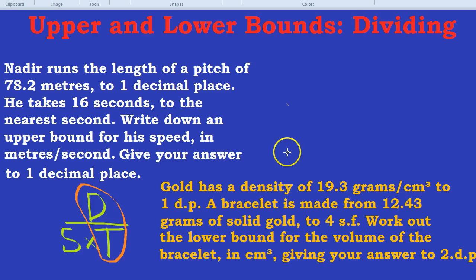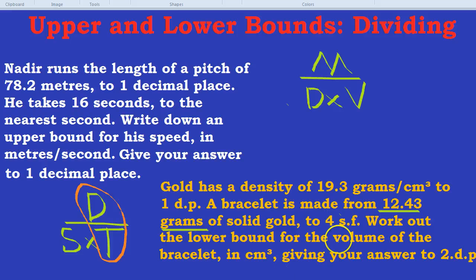We're going to need to know the mass-density-volume triangle. Again, a very useful triangle to know, and it looks like this. You have mass on top, and D times V. Mass, density, and volume. If you weren't sure, the 12.43 grams, that's the mass part of it. But we're looking for the volume, so how do we get the volume? The volume is mass divided by density.